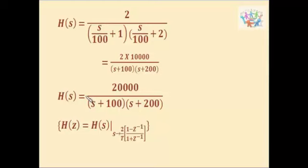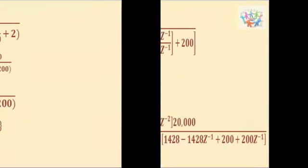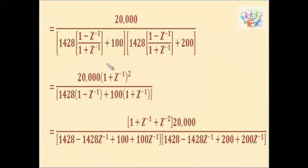We have to find the bilinear transformation. In order to do that, we have H of Z is equal to H of S and we have to replace S with 2 by T into 1 minus Z inverse by 1 plus Z inverse. We have to substitute that in place of S.